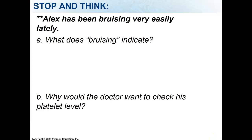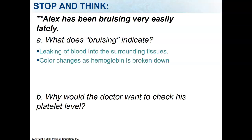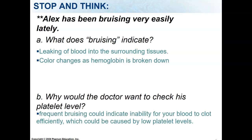Stop-and-think question: Alex has been bruising very easily lately. What does bruising indicate? When you see a bruise on your skin, blood has leaked out of a blood vessel into surrounding tissue. Your clotting process has probably taken over and stopped the leakage, but some blood cells remain in your tissue. The bruise color starts out very dark — purple or black — then eventually changes to yellow before going away. That is just the hemoglobin being broken down over time. Frequent bruising could indicate the inability for your blood to clot efficiently, which could be caused by low platelet levels, so the doctor would want to check that.